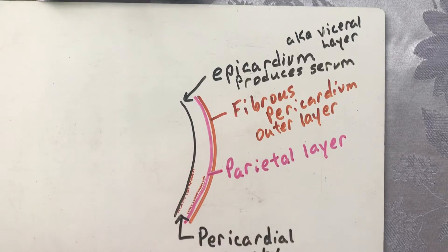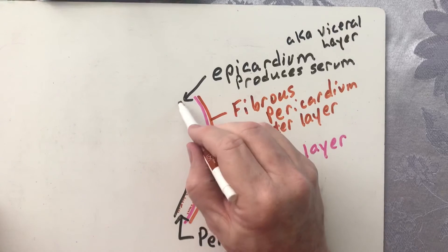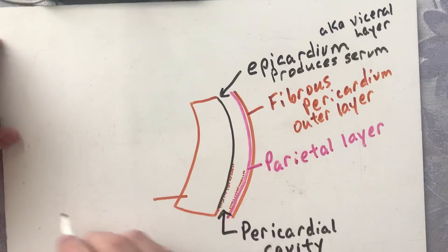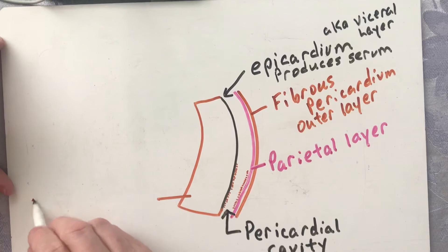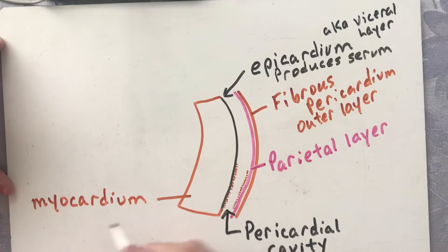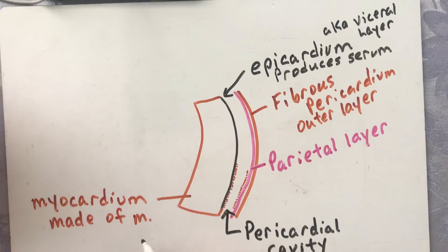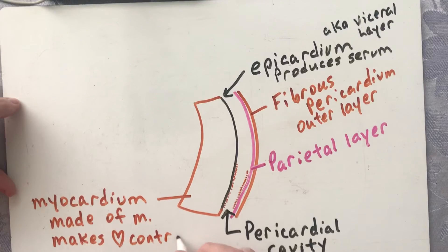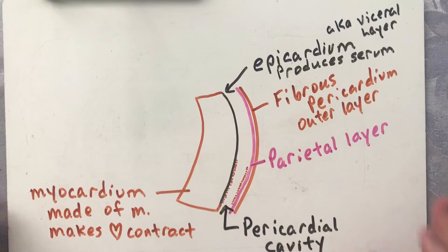The next layer is pretty thick and is called the myocardium. It's made of muscle — remember, 'M' stands for muscle. The myocardium is responsible for the heart contractions.